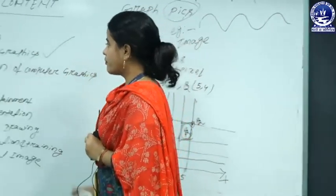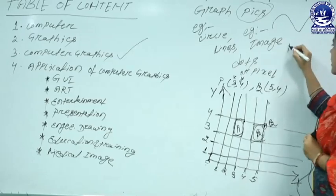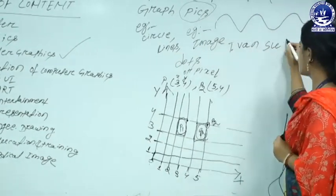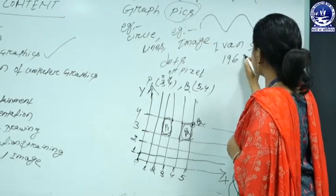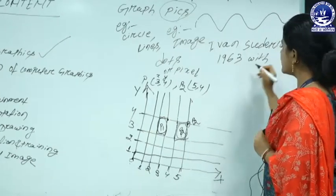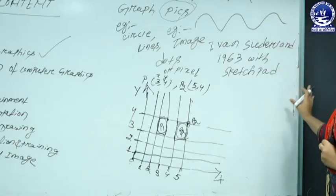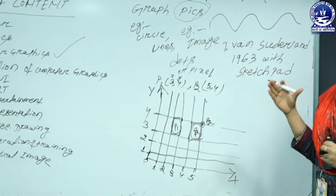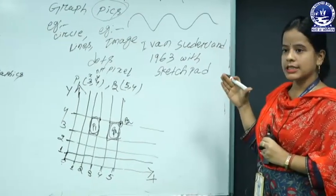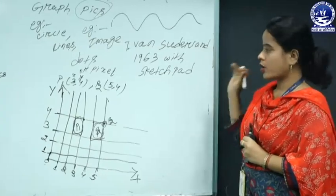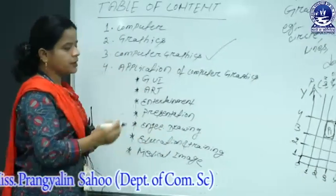Computer graphics was initially developed by scientist Ivan Sutherland in the year 1963, with a mini device called Sketchpad, through which different types of geometrical figures could be easily drawn. After that, different types of simulators were designed for army purposes, through which different types of graphical objects could be executed in machinery products.